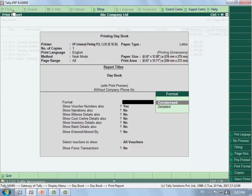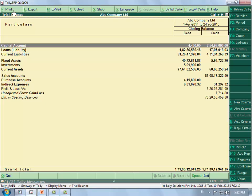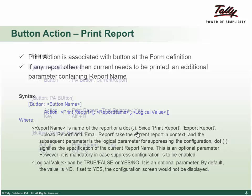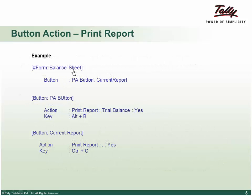We have a common button everywhere for Alt+P print — whether in trial balance or any other report — the same print button is used. It is highly impossible to create multiple print buttons for each report. Hence we use a common button action print report. With the enhanced behavior of this logical parameter, the report name is mandatory. To overcome these circumstances where we do not want to create multiple print buttons, we can use a dot, which means the current report. If a print attribute is mentioned at form level, it will print that particular report.